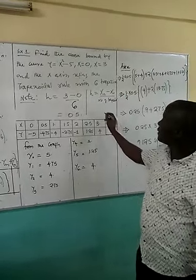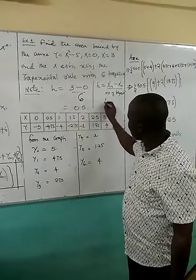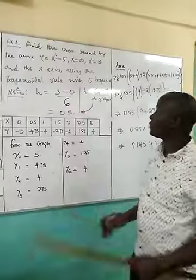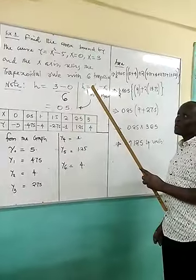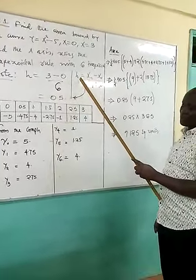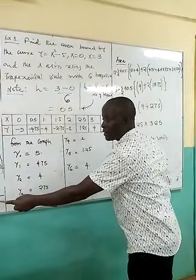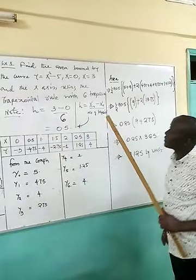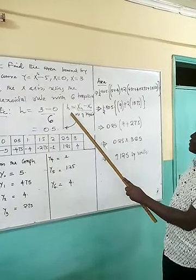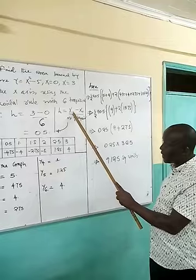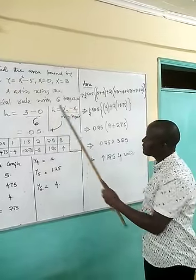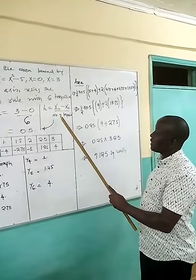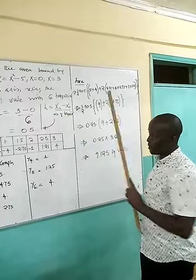In this case, my h that I'm going to use, this is the formula we'll be using to get the h that we'll use in calculating the area using the trapezoidal rule. Where I'll have my h is the last value of x minus the first value of x, then I divide by the number of trapezoids. Now in this case, my first...